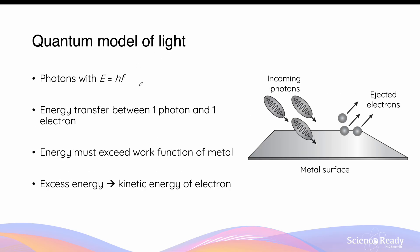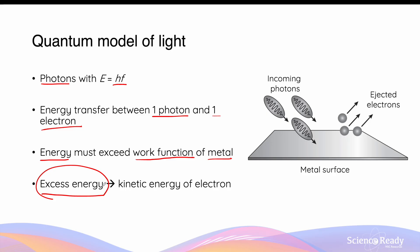The conflict between experimental observation and wave model predictions led to Einstein's quantum model of light. In this model, Einstein describes light as consisting of photons, with the energy of a photon given by Planck's constant multiplied by its frequency. When photons are incident on a metal surface, they transfer energy to electrons — one photon to one electron — and this energy transfer only occurs if the photon's energy exceeds the work function of the metal, which is the minimum energy required to remove an electron. Any excess energy beyond the work function is transformed into the electron's kinetic energy, so the kinetic energy of a photoelectron equals the photon's energy minus the work function.